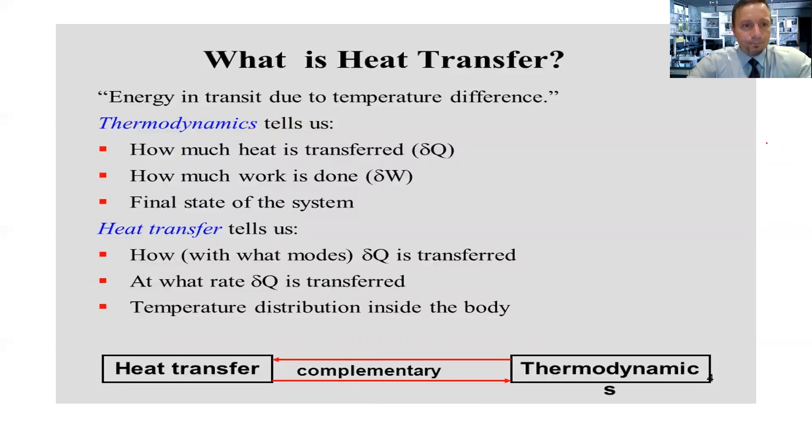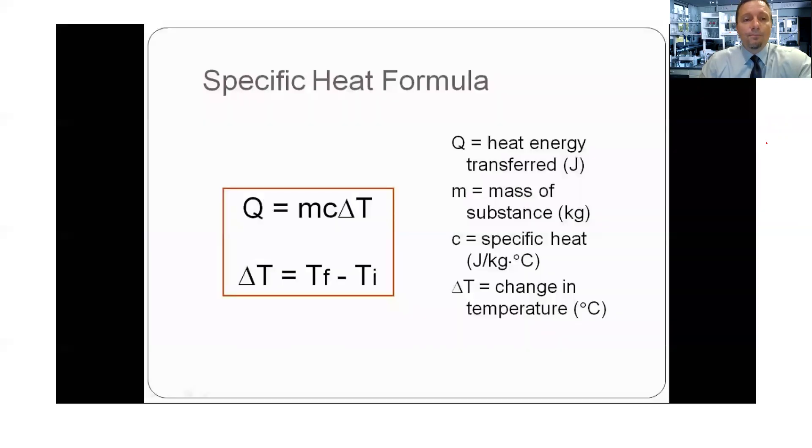So what is heat transfer? Energy is transmitted due to temperature differences. Thermodynamics tells us how much heat is transferred, that's Q, and how much work is done, that's W, and the final state of our system. Here is one that is really useful: Q = mcΔT. We've used this quite a bit. Q is the heat transfer, m is mass.